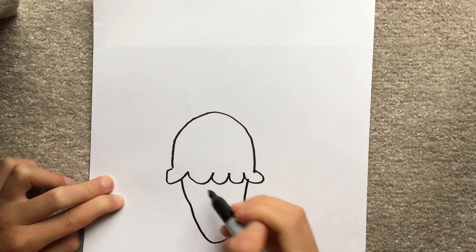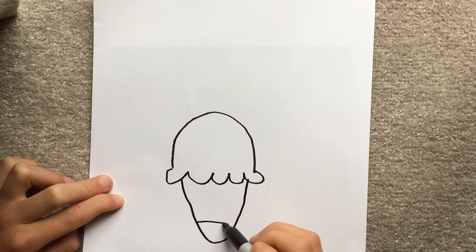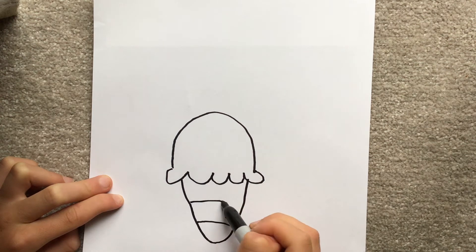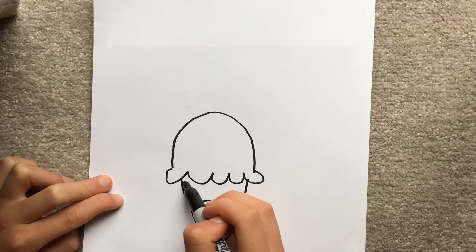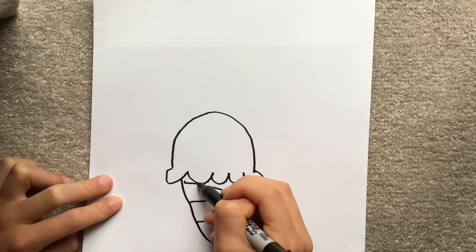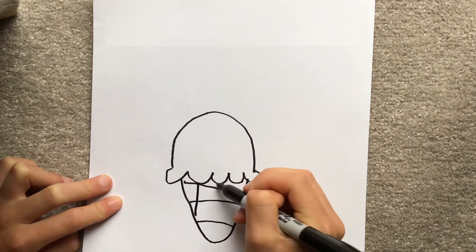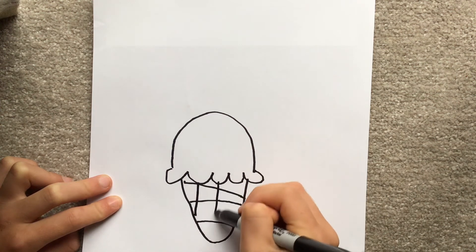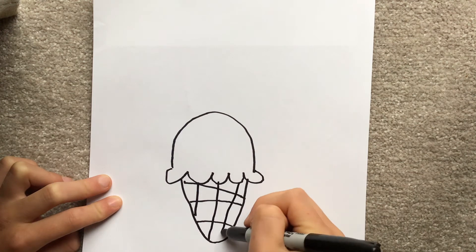And the cone. You got the lines. And another line. And another. You got that there, that there, and that there.